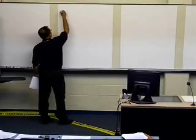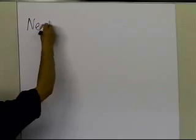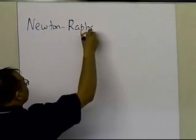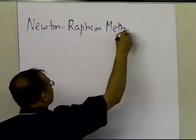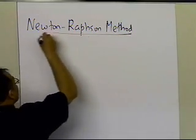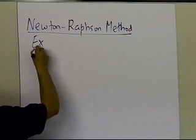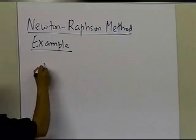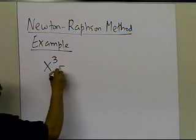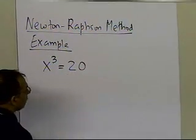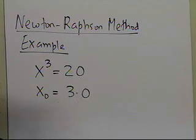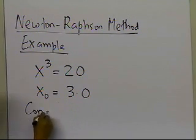In this segment, we're going to take an example for the Newton-Raphson method of finding the roots of a nonlinear equation. So we're going to take an example of that. Let's suppose somebody tells me to calculate the root of this equation, x cubed equal to 20, and says go ahead and use the Newton-Raphson method, and choose the initial guess of 3.0, and maybe conduct three iterations.